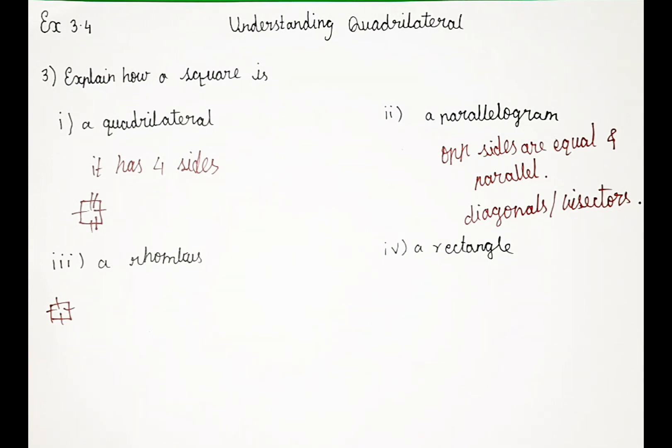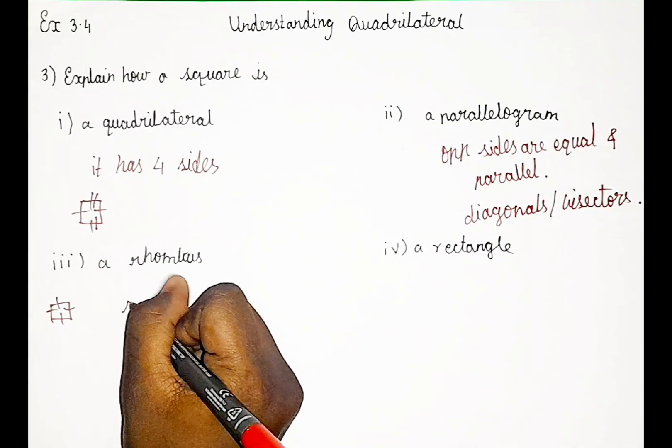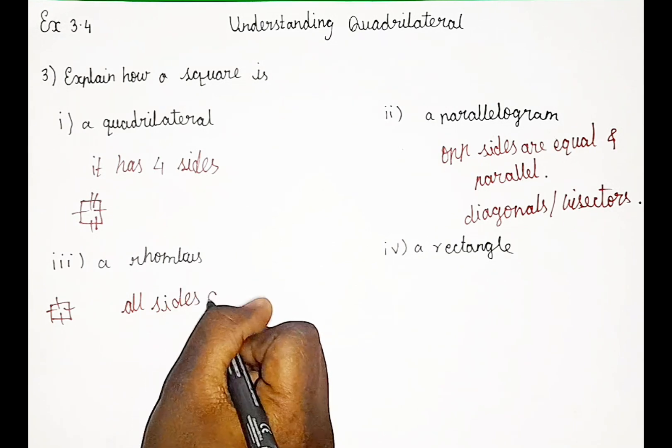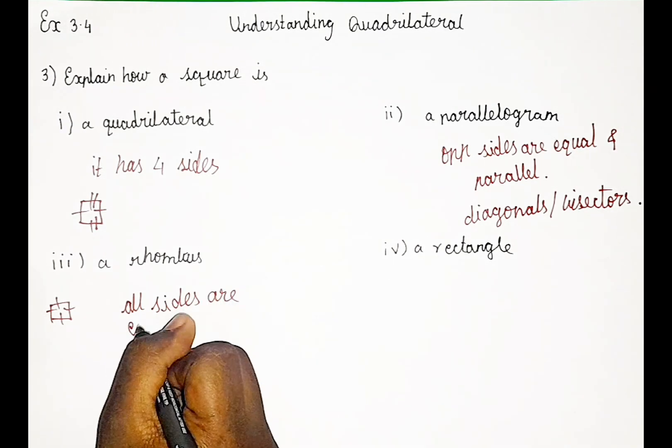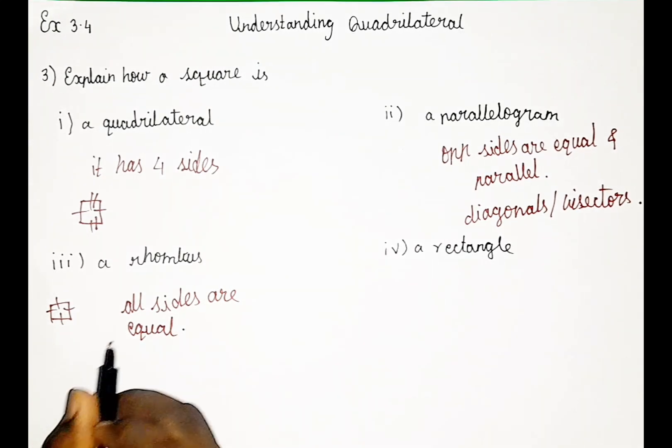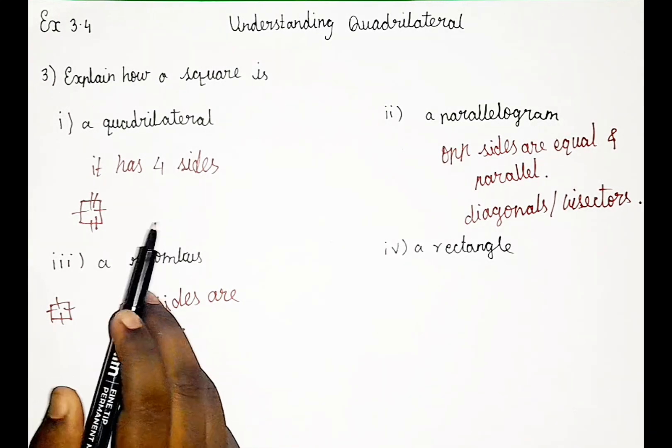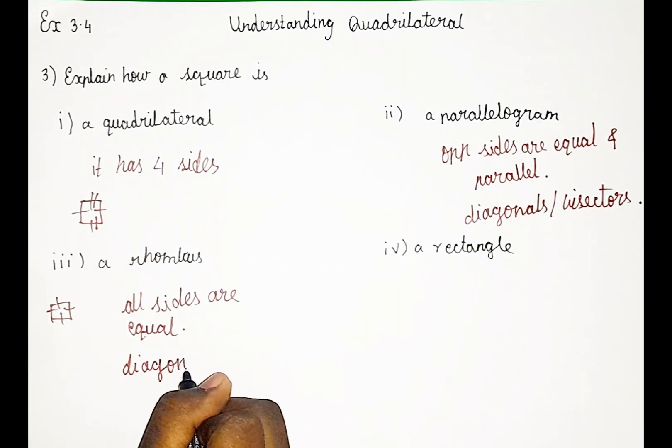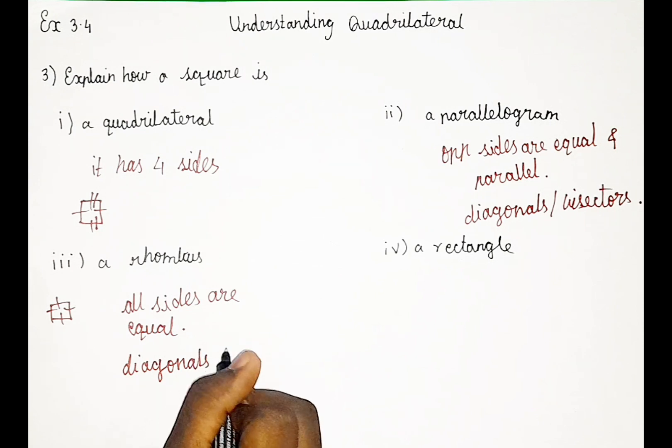Opposite sides are also equal. In square, all sides are equal. So we shall write all sides are equal. And one more thing is there. As I already told you guys, in square we have diagonals, isn't it? So let me write. Diagonals bisect at 90 degree.